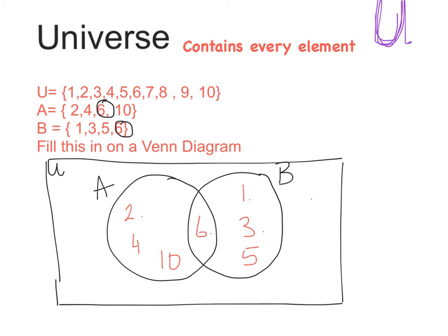7. So I'm going to put a circle around 7 because 7 I do not have anywhere in A and anywhere in B. But the universe contains every element. So outside of the circles A and B, I am going to place the number 7.